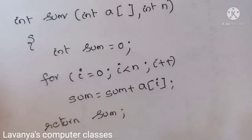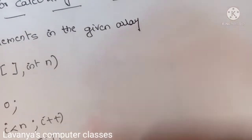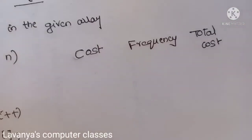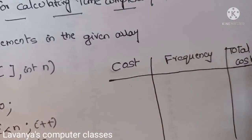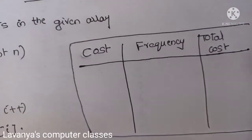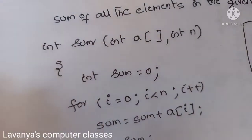Now I want to find the time complexity of this algorithm using the step count method. In this method we prepare a table with three columns: cost, frequency, and total cost. Cost is the time a particular line takes to execute; frequency is how many times that line is executed; and total cost is the product of cost and frequency.